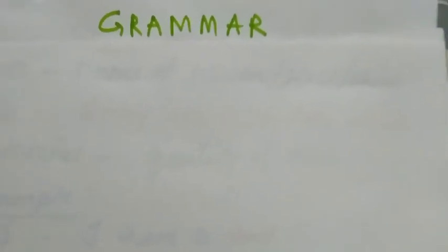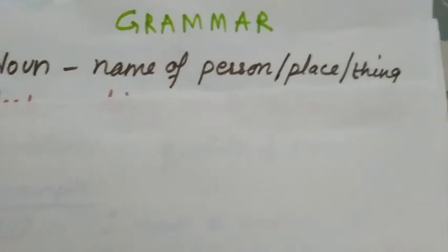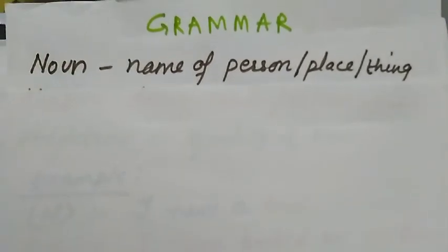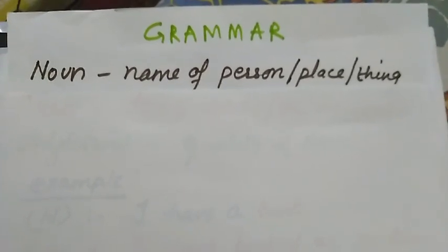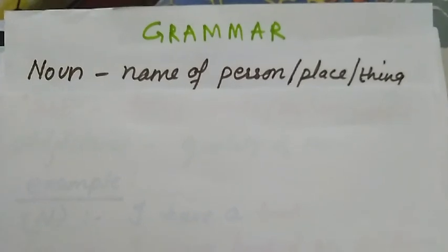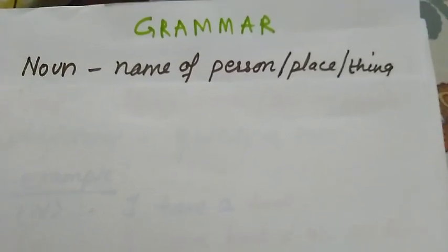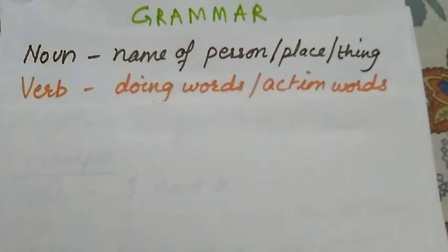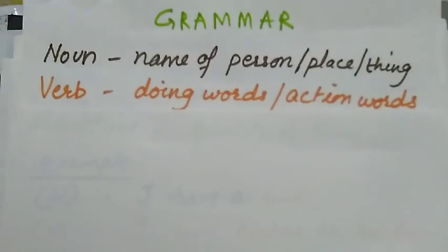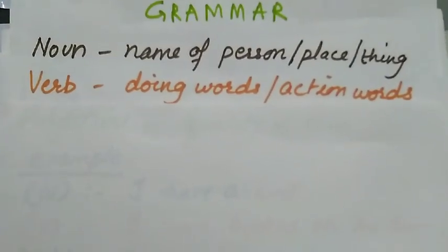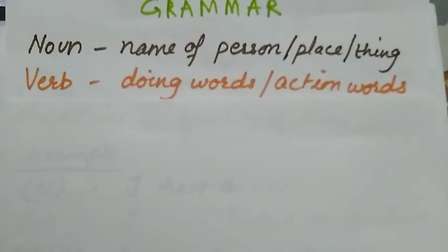You know very well that nouns are the words which describe the name of person, place or thing. And what is verb? Verbs are words used for expressing the doing or actions. They are called action words or verbs.